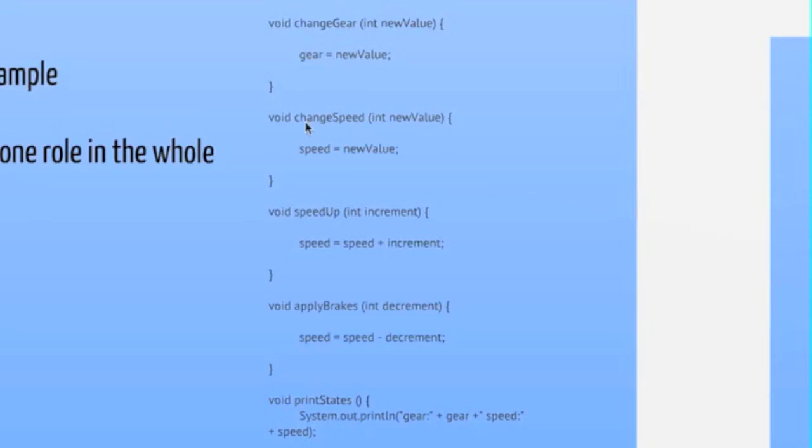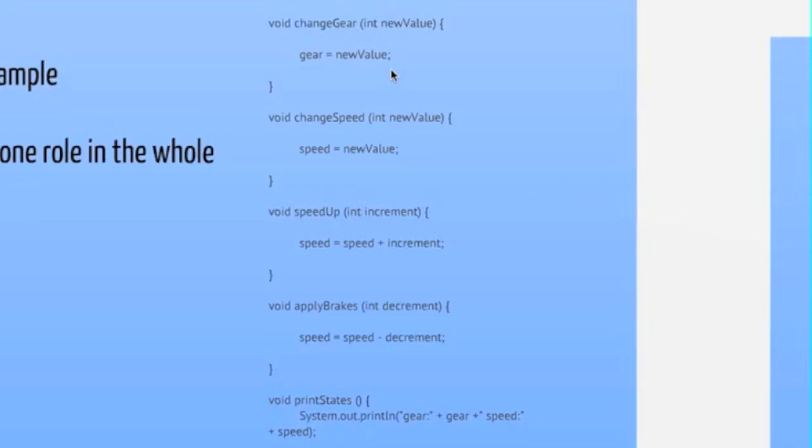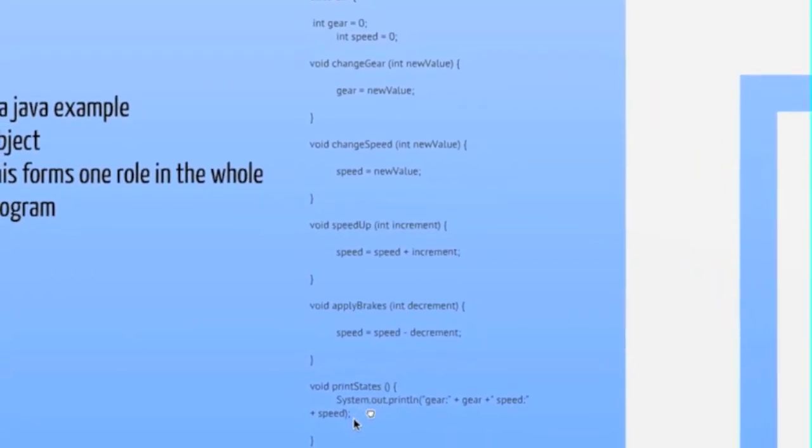The fields gear and speed represent the object state. The methods change gear - there's a method void which means the user has no interaction with it, it happens in the background. Void functions change speed and change gear, speed up, apply brakes - it defines interaction with the outside world. Notice the car class doesn't contain a main method because it's not a complete application, it's just a blueprint for cars in general that might be used in an application. This gives you a print state function, then it's going to give you the gear and speed - these are functions that work inside your bigger program.